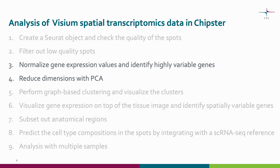In this step, the gene expression values are first normalized and highly variable genes are detected. Then, PCA is performed using the highly variable genes. This tool finally outputs a Seurat object after PCA, and also outputs PCA plots that can be used to select the number of PCs used in the next step.